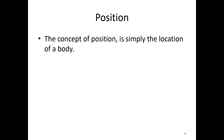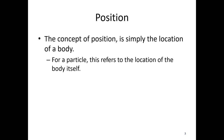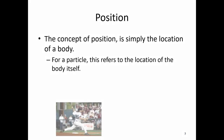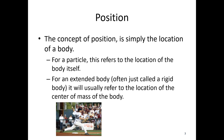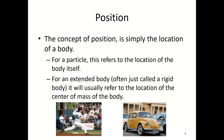First up is position. The concept of position is simply the location of a body. For a particle — just a single point — something like a baseball might be described as a particle, using a single location. For an extended body, which we often call a rigid body, position usually refers to the location of the center of mass. So for something like a car, we'd choose the center of mass rather than the front, back, wheel, or anything like that.